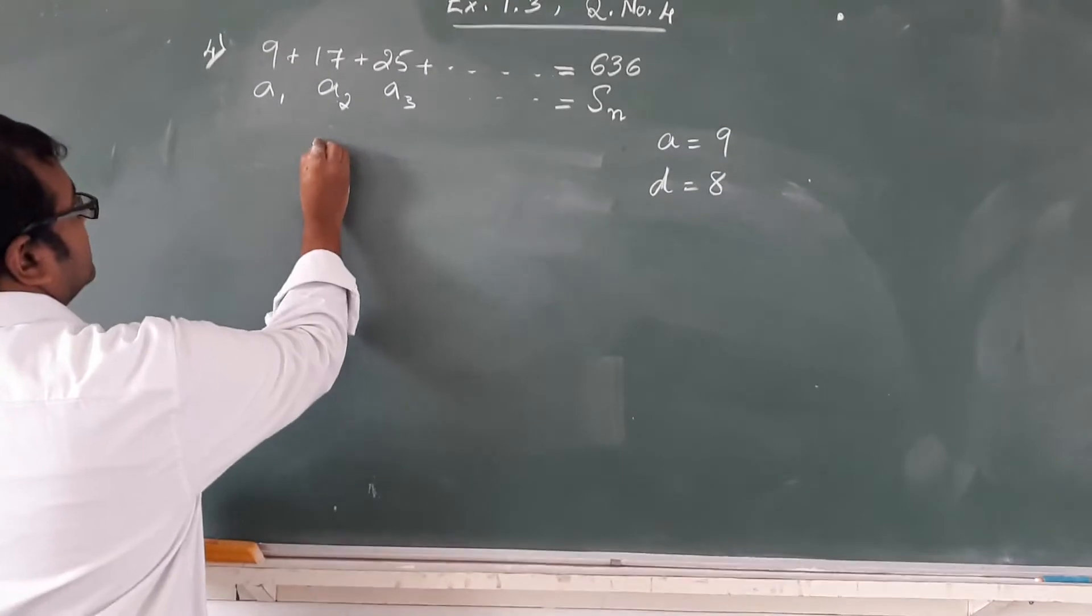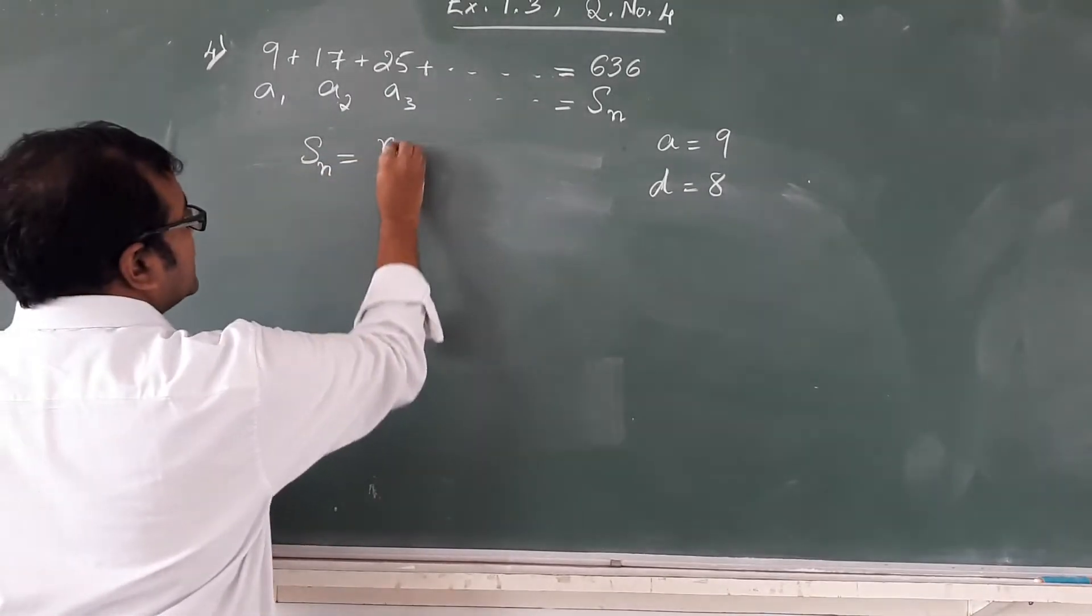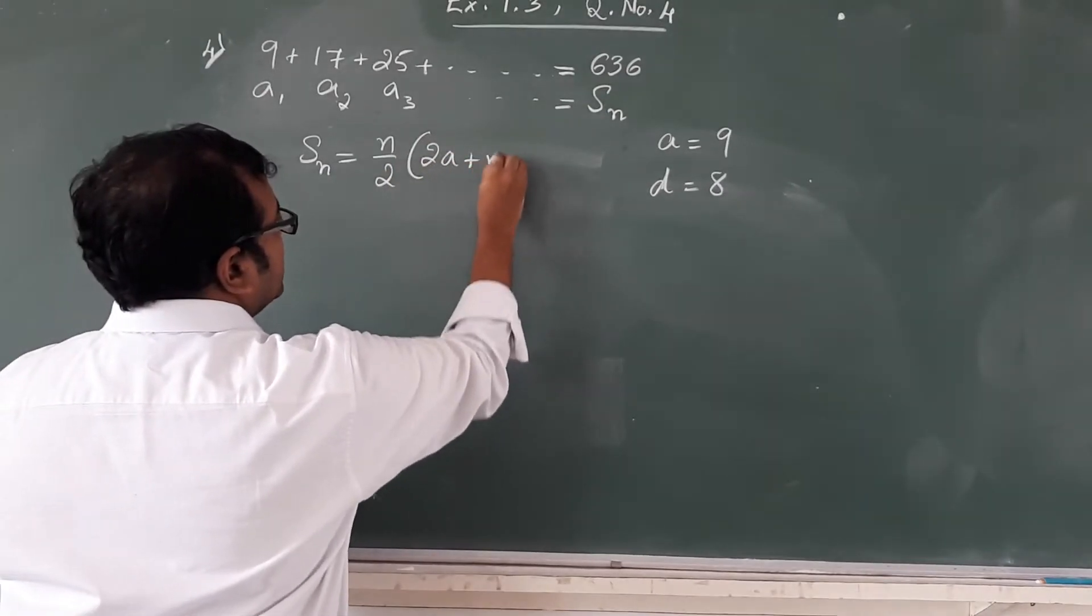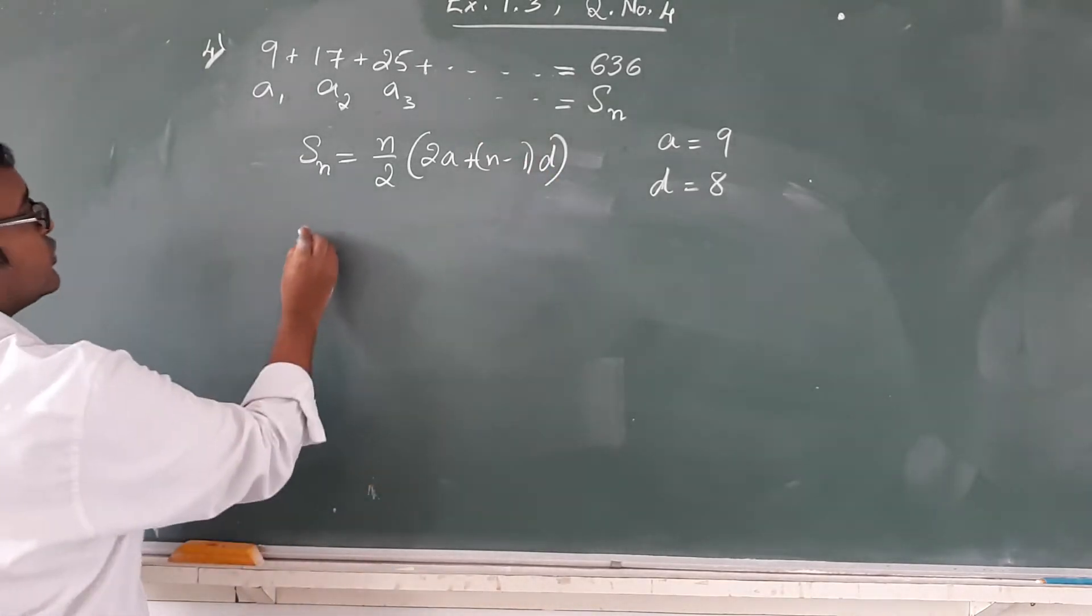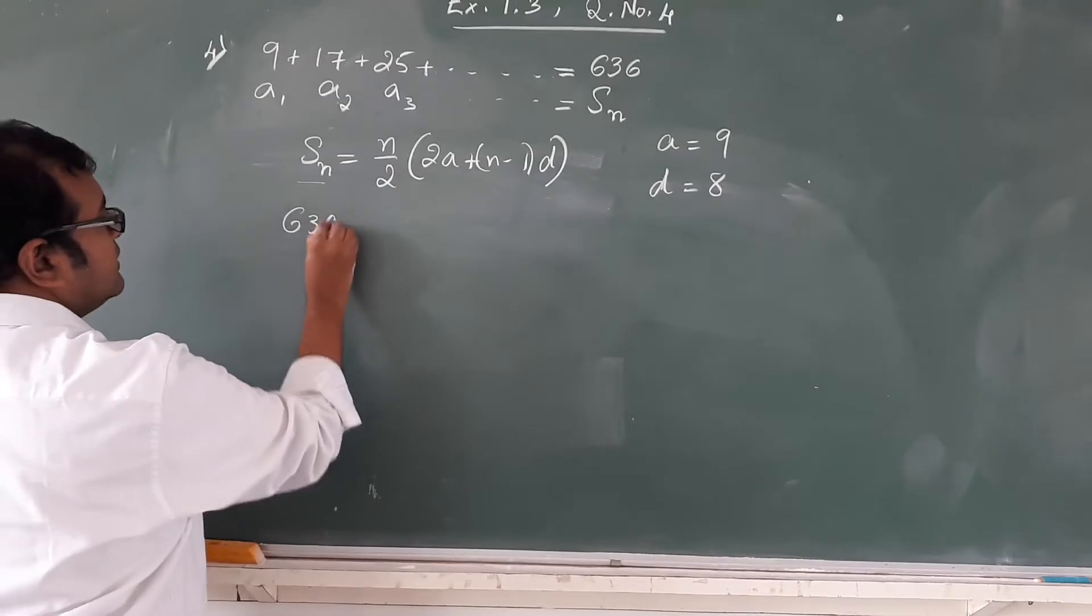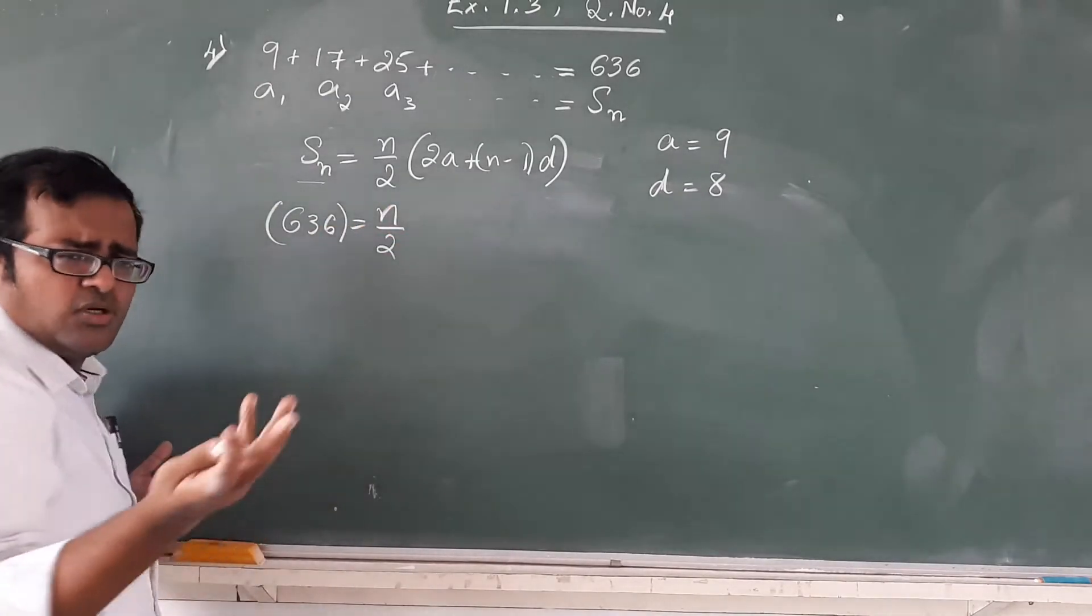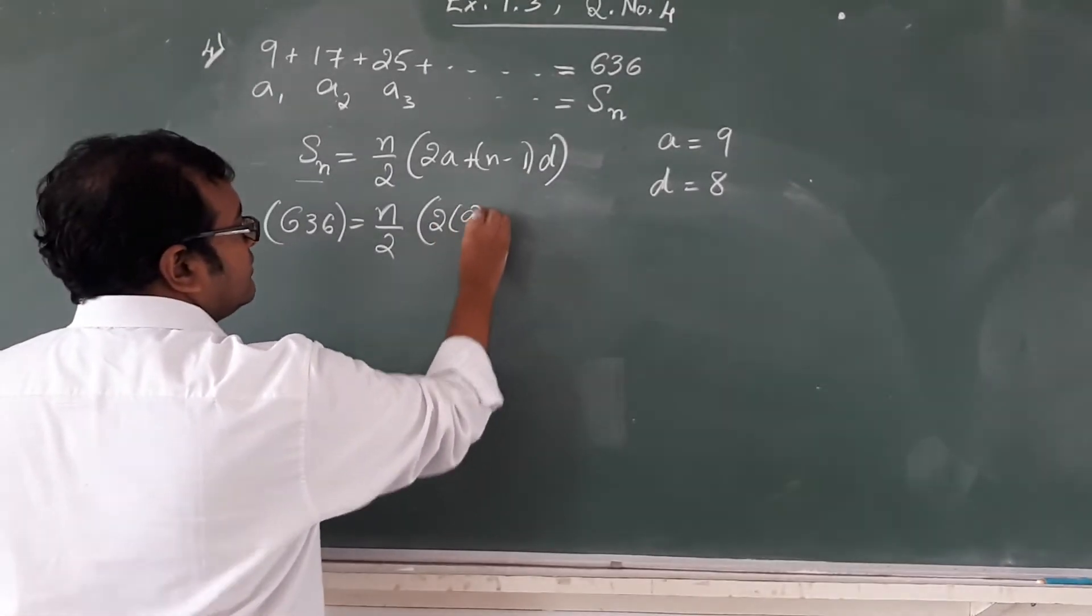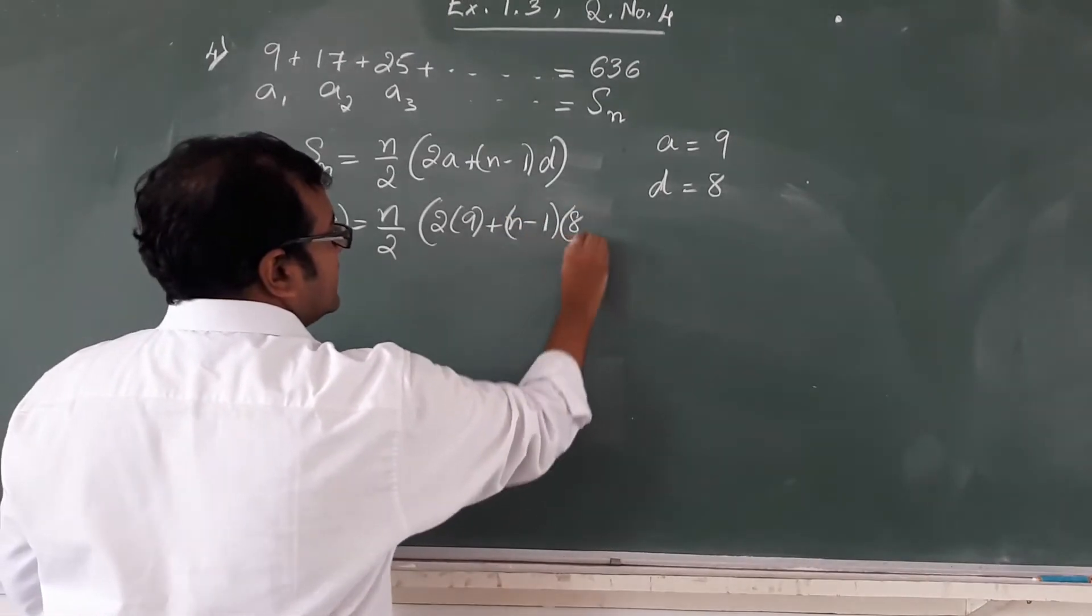So continuing with the Sn formula, we know it is n upon 2 times 2A plus n minus 1 times D. Substituting the values, Sn value is 636. 636 equals n upon 2, n remains n because we do not know the value of n, times 2 times A which is 9 plus n minus 1 times D which is 8.